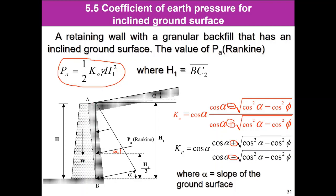H1 is the height of the vertical plane. Because we have the inclined surface, H1 is greater than H, where H is the height of the wall only. The direction of PA changes to be parallel to the inclined surface, and the position of PA from the base equals H1 divided by 3.